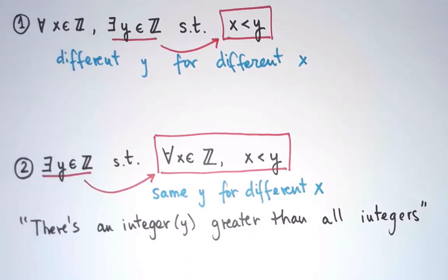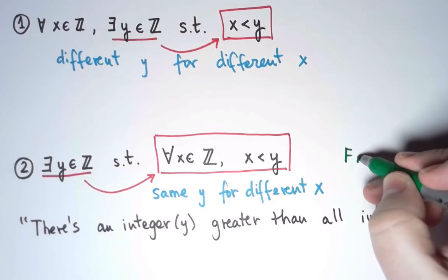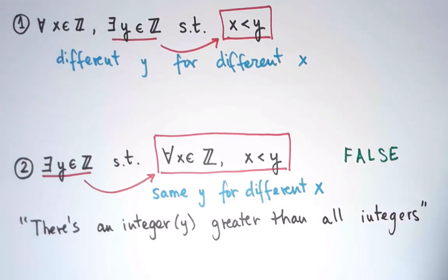And when we put it that way, we see that this statement is false. There is no such thing as an integer greater than all others.